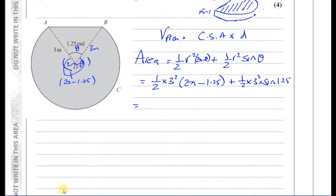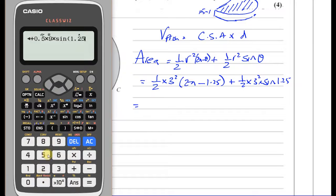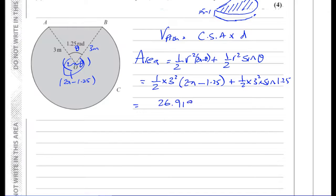Using the calculator in radian mode: ½ × 3² × (2π - 1.25) + ½ × 3² × sin(1.25) = 26.9197. So the cross-sectional area of the pond is 26.9197 square meters.